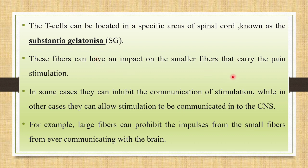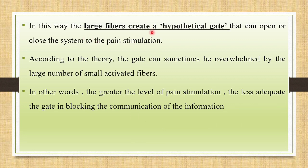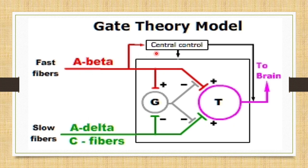The T cells have an impact on smaller fibers carrying pain stimulation. In some cases they can inhibit communication of stimulation, while in others they allow it to reach the central nervous system. The large fibers can prohibit impulses from the small fibers from ever reaching the brain. In this way, large fibers create a hypothetical gate that can open or close the system to pain stimulation. According to gate theory, the gate can be overwhelmed by a large number of small activated fibers — the greater the pain stimulation, the less adequate the gate is at blocking information transmission.